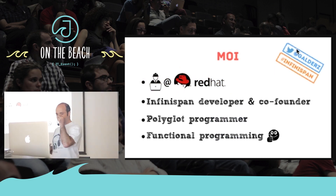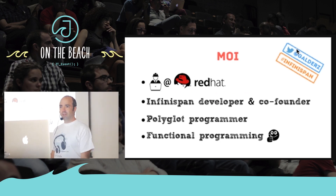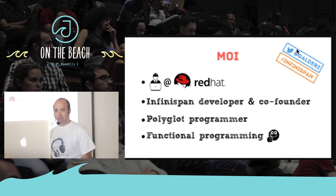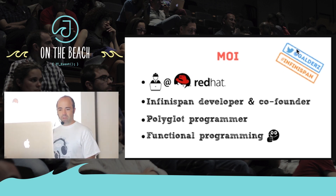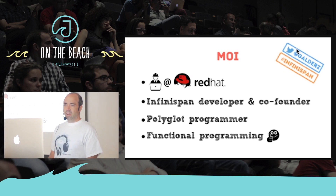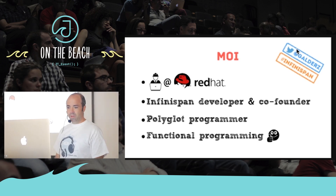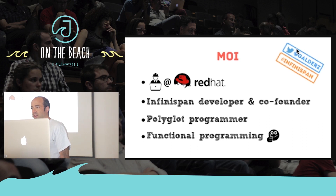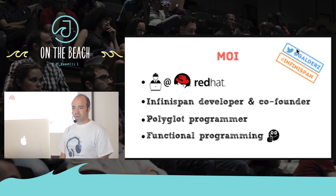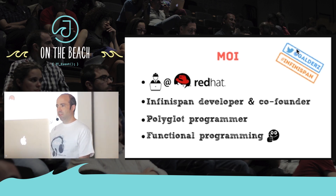I work at Red Hat, within the JBoss division — the Java middleware area. I'm one of the co-founders of InfiniSpan, which is an in-memory data grid, and we're going to be seeing a bit of it today. I currently lead the client-server architecture. I write code in multiple languages: Java, Scala, JavaScript, and Haskell. I got very interested in languages that promote functional programming because I think it's a very neat way of programming. I'm on Twitter, and if you have any comments about the talk, just use the InfiniSpan hashtag.